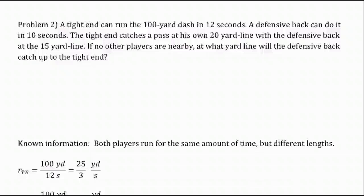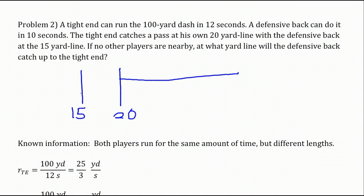Here is the next question we're going to look at. We were given that a tight end can run the 100-yard dash in 12 seconds, and a defensive back can do it in 10 seconds. That's telling us the rate, how fast they can run. We're assuming in this problem that that's their top end speed or their constant speed. The problem is telling us that the tight end catches the pass at the 20-yard line, but the defensive back's behind it at the 15-yard line. But since the defensive back is faster, it can catch up eventually.